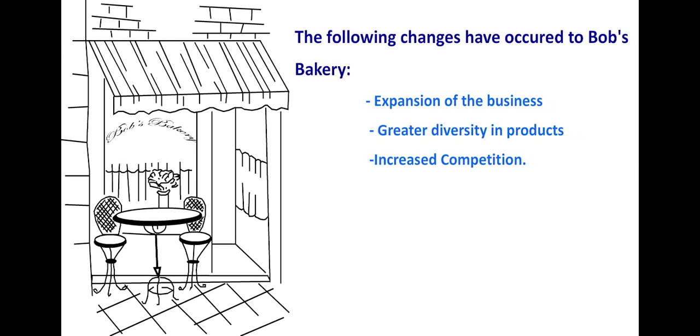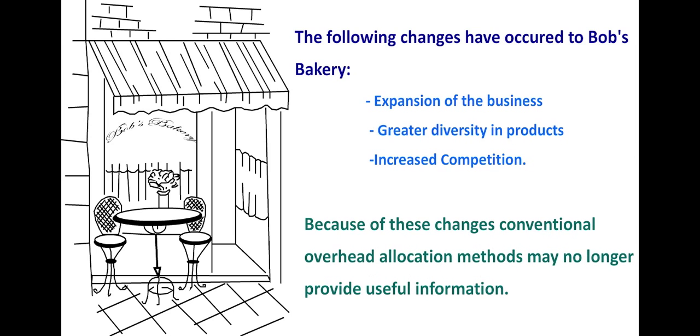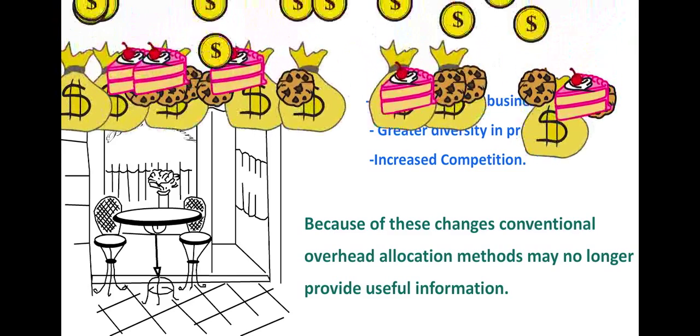Because of the increase in product complexity and the need for more accurate information for better decision-making, Bob decides to review the way product costs are being calculated. He is worried that the conventional method of overhead allocation that he is currently using, the plant-wide method, may be providing a distorted picture of how firm resources are being consumed by each of the product lines.